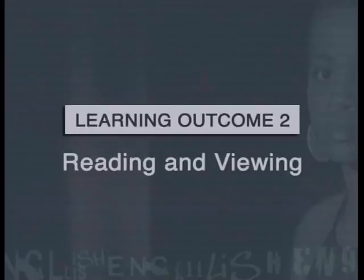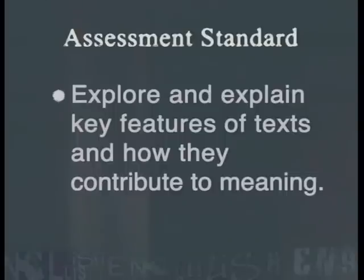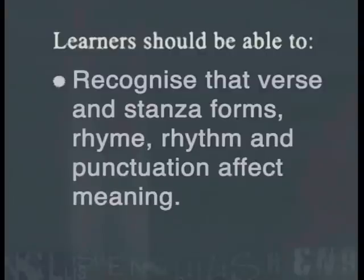The following lesson is linked to Learning Outcome 2, Reading and Viewing. It addresses the assessment standard that requires learners to explore and explain key features of texts and how they contribute to meaning. Learners should be able to recognise that verse and stanza forms, rhyme, rhythm and punctuation affect meaning.